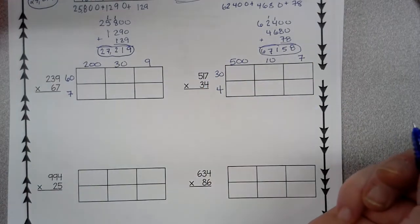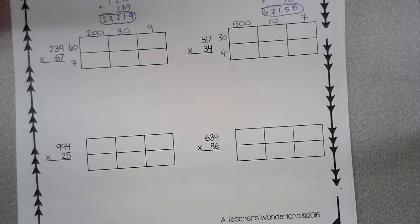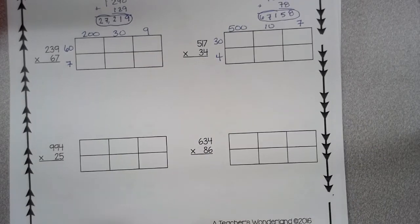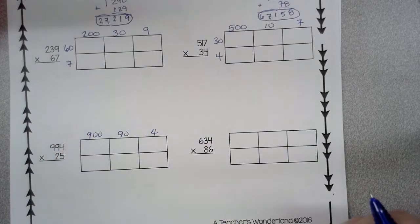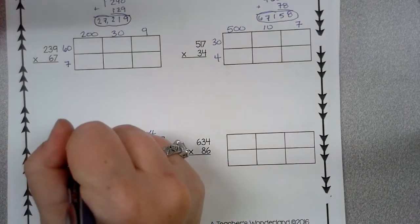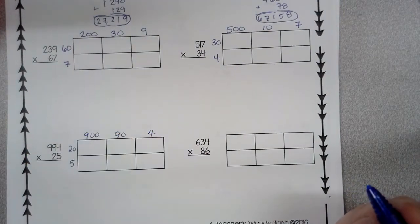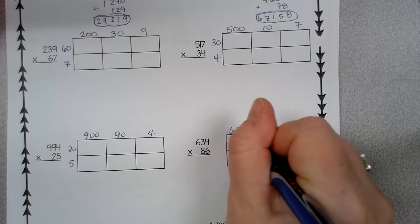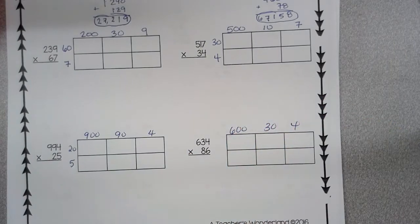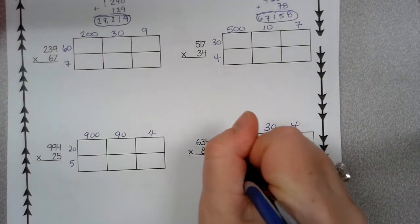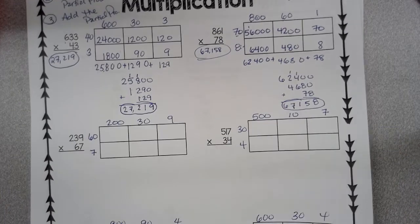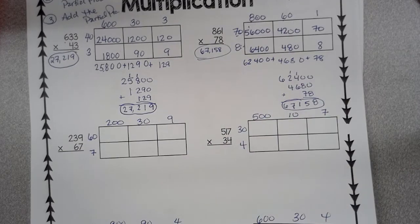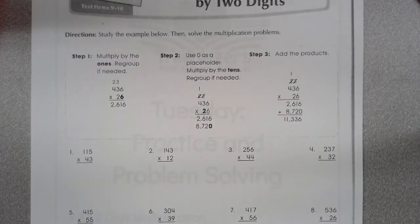994. See, when you say it out loud, you're basically already doing it because you have 900, 90, 4, 20. 65, 600, 34, 86. So that is your 3 by 2 multiplication with area model.